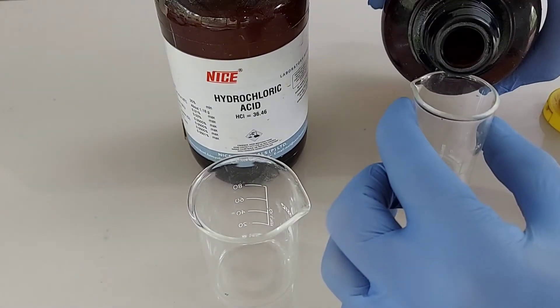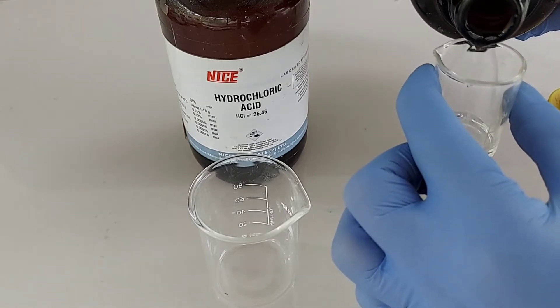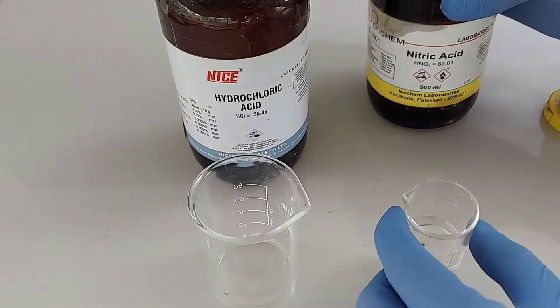Both hydrochloric acid and nitric acid alone cannot dissolve gold or platinum. Then why do these two acids when mixed together dissolve powerful metals like gold and platinum?